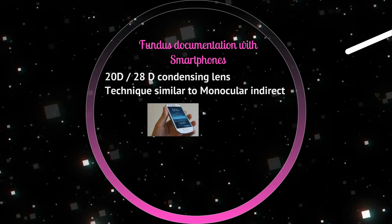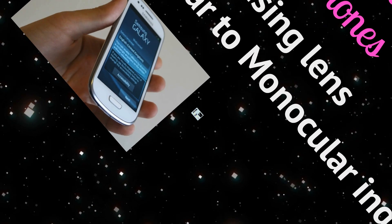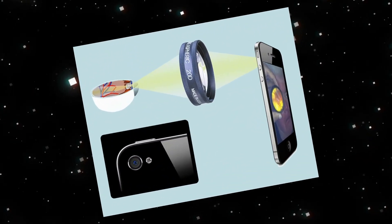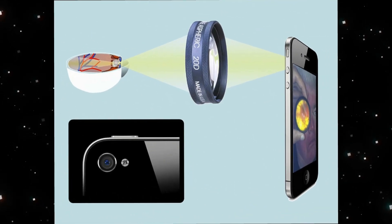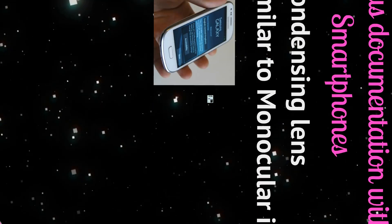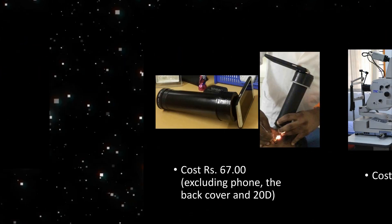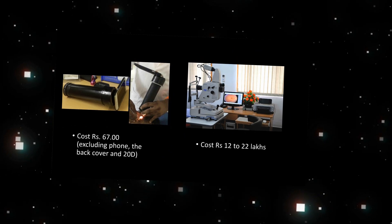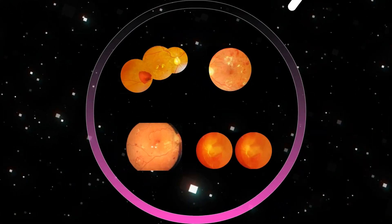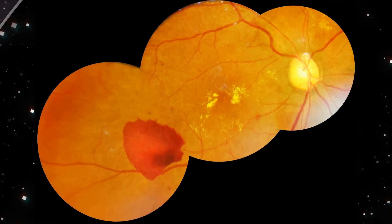Using a condensing lens and a continuously on flash on the phone, smartphones can be used to capture high-quality fundus images. The optical principle of smartphone fundus photography is similar to monocular indirect ophthalmoscopy. A cost-effective do-it-yourself retinal camera adapter can also be used for fundus photography. Excellent images can be captured with this technique as seen in these photographs.